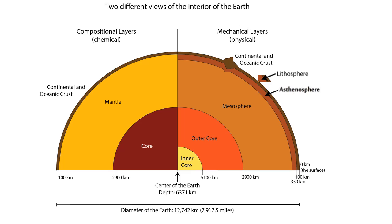The mesosphere is the next layer. Pressure is really starting to build, which restricts the molecules' ability to move, making it very rigid. Passing the mesosphere, the liquid outer core — at extremely high temperatures — melts the metal contained in this layer into liquid form. Finally, we reach the inner core, which, just like the outer core, has extremely high temperatures and is composed of metals under immense pressure.